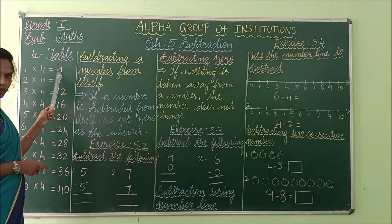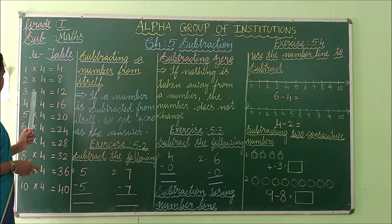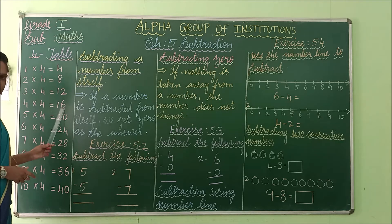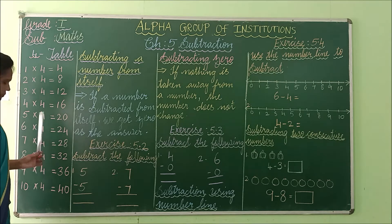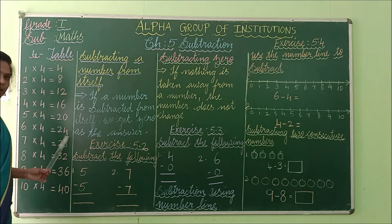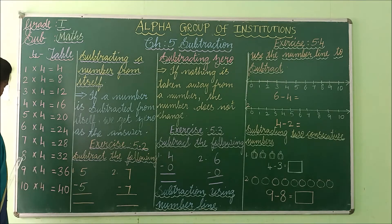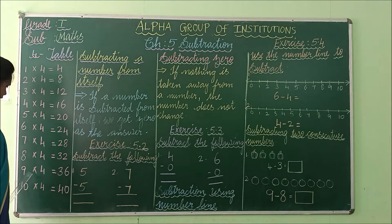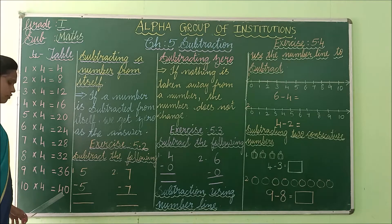1 four is 4. 2 fours are 8. 3 fours are 12. 4 fours are 16. 5 fours are 20. 6 fours are 24. 7 fours are 28. 8 fours are 32. 9 fours are 36. 10 fours are 40.